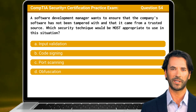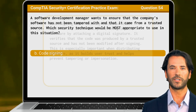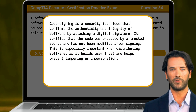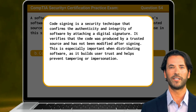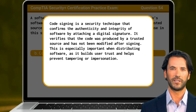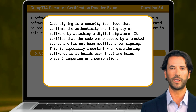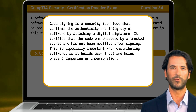The answer is B: Code signing. Code signing is a security technique that confirms the authenticity and integrity of software by attaching a digital signature. It verifies that the code was produced by a trusted source and has not been modified after signing. This is especially important when distributing software, as it builds user trust and helps prevent tampering or impersonation.